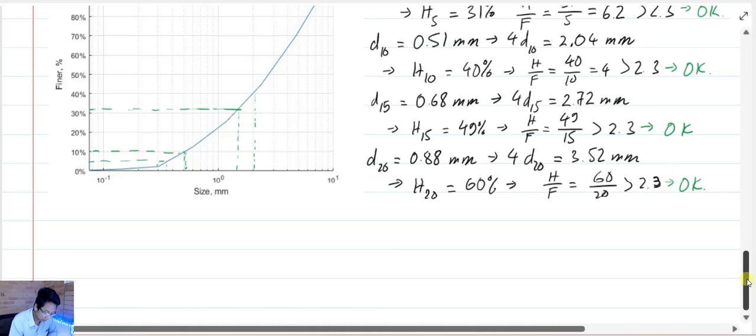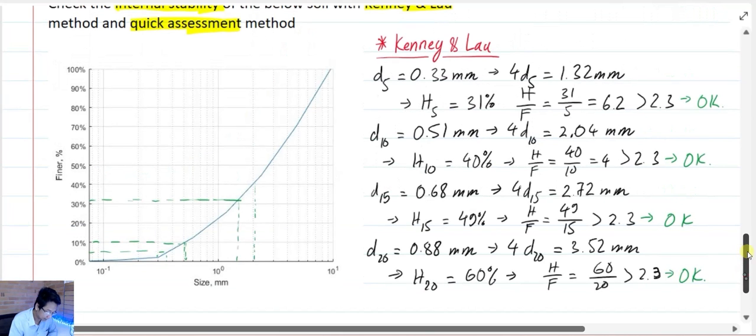So according to Kenny and Law method, we have the soil is internally stable.